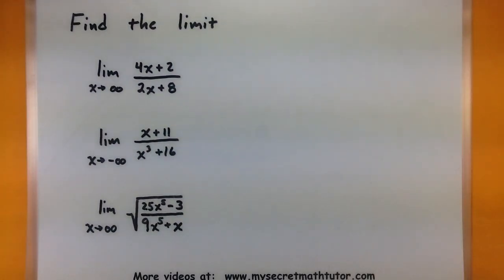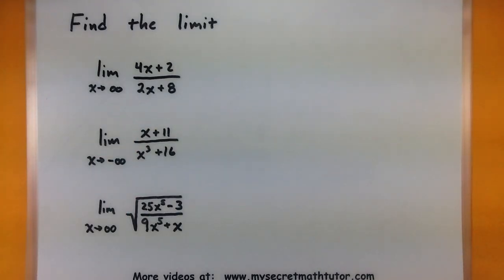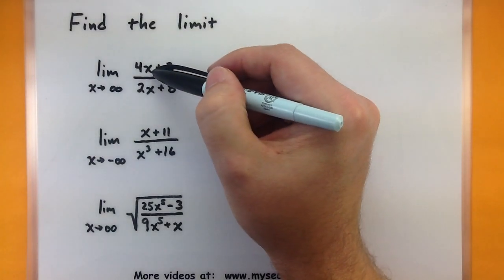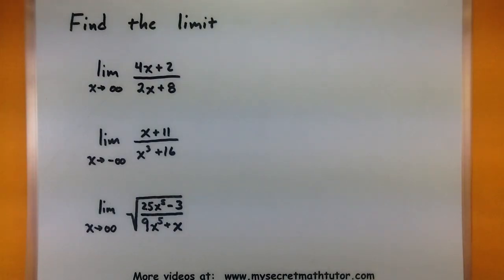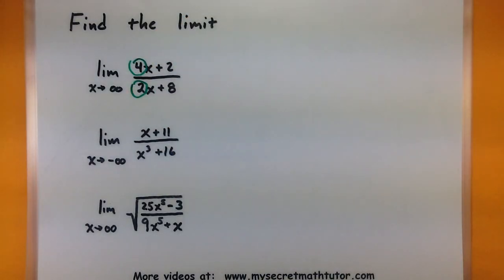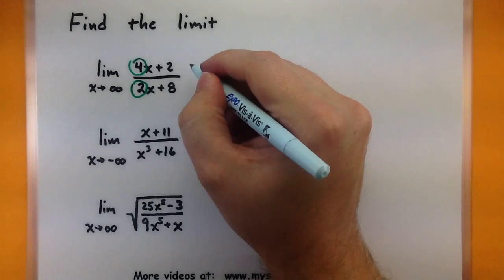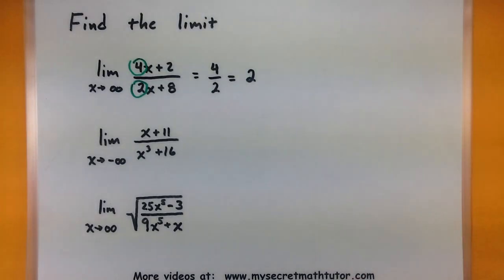We want to find the limit as x approaches infinity of (4x + 2) over (2x + 8). Now x is actually approaching infinity. We find the largest power of x in the top and bottom — both are x to the first power, so the powers are the same. That means the limit exists and comes from the leading coefficients: 4 over 2, which simplifies to 2. The function approaches 2.